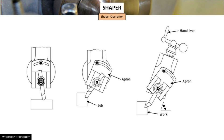A shaper is a machine tool which is primarily designed to generate a flat surface by a single point cutting tool. Besides this, it may also be used to perform several other operations as well.